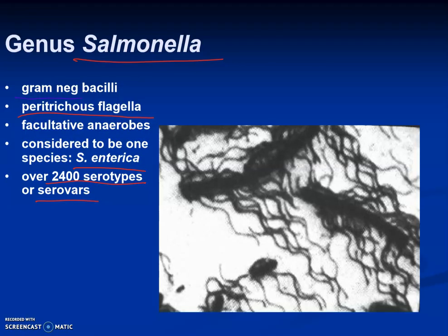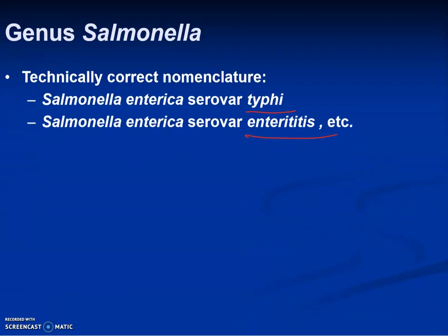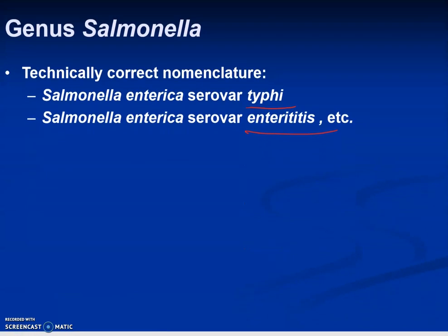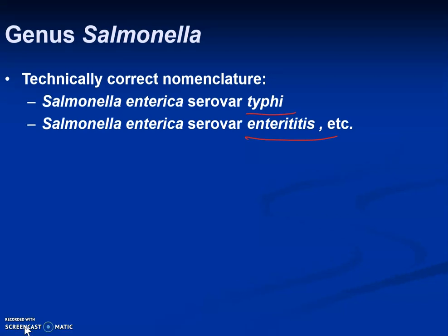Moving on to a big offender: the genus Salmonella. This genus has over 2,400 subtypes or serovars. It's a gram-negative bacillus with peritrichous flagella, facultative anaerobic, considered one species: Salmonella enterica. Two different serovars would be Salmonella enterica serovar Typhi and Salmonella enterica serovar Enteritidis, among thousands of others.